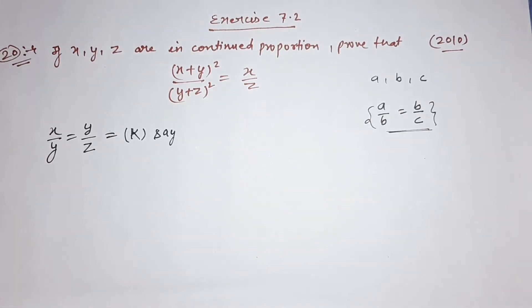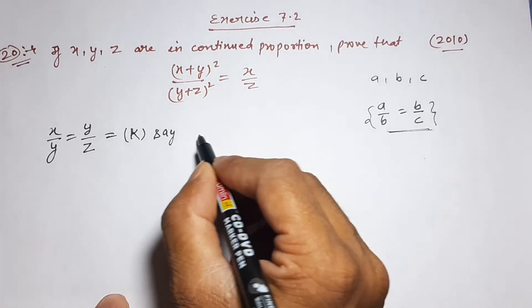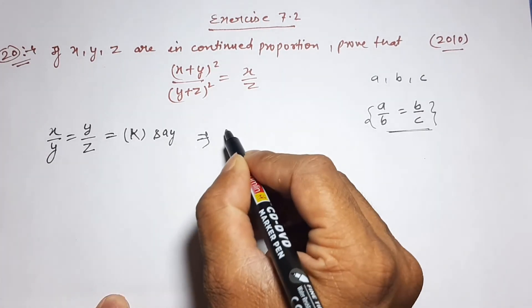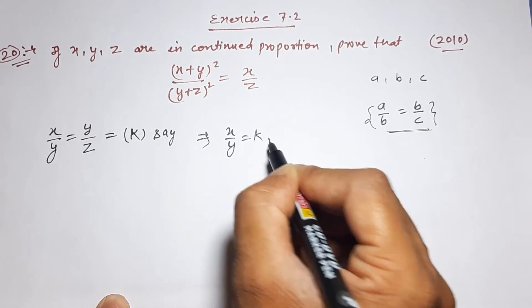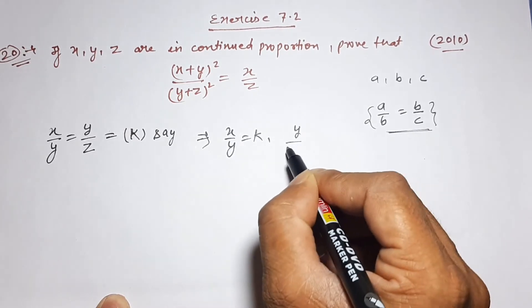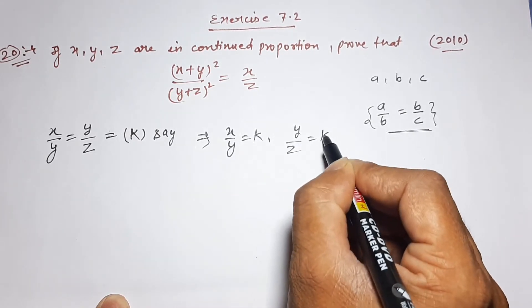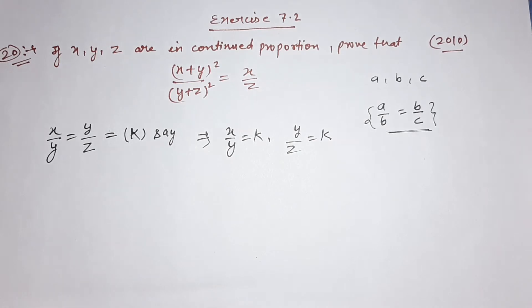We set x upon y equal to k, and y by z equal to k. So both ratios equal the same constant k.